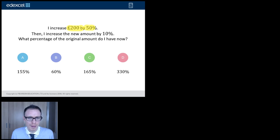So this week we've got a percentage question kindly provided by Edexcel. But I'll tell you what, as lovely as it is, it is causing students problems. So let's take a look at it. I increased £200 by 50%, then I increased the new amount by 10%. What percentage of the original amount do I have now? Right, a lot to contend with. Good news is, it's a calculator question, and I know this sounds obvious, but if it's a calculator question, make use of your calculator.